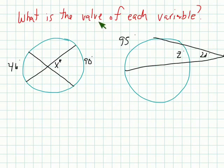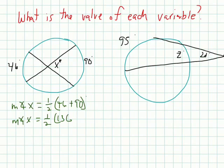Let's do some examples. What is the value for each variable? Well, x is inside the circle. So that's going to be the measure of angle x will be equal to half of 46 plus 90. So the measure of angle x is going to be half of 136 degrees. And then simplify, and you'll get x is 68 degrees. And guess what? If this is 68, so is this. This is also 68.